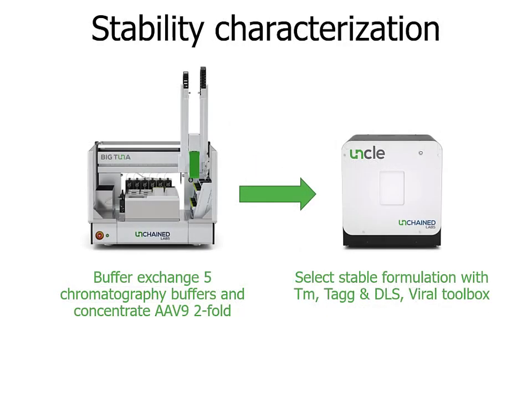I'm going to walk you through an actual experiment we did here at Unchained Labs using both Big Tuna and UNCLE. With Big Tuna, we took a sample of AAV9 and buffer exchanged it into five different buffers, then concentrated it two-fold. We took those buffer-exchanged and concentrated samples of AAV9 and put them into UNCLE to look at both capsid disruption and genome ejection TMs, aggregation temperatures, and DLS using the TM-TAG and DLS application and the viral toolbox.